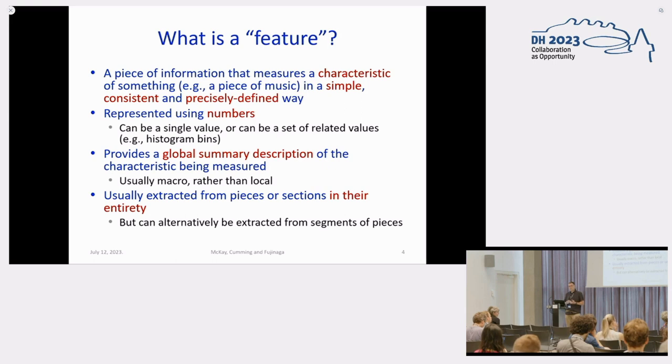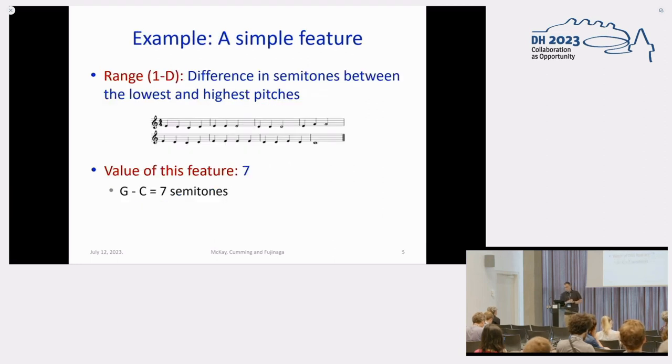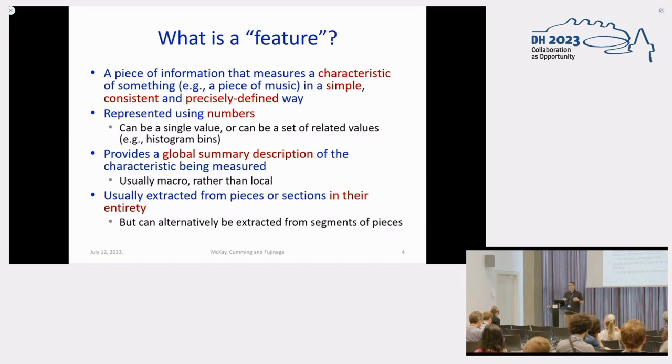We're going to be extracting features from pieces in their whole, entire pieces or from major sections. It's also possible to extract n-grams or features from smaller windows of music. To give you a simple example of a feature, you could take this little melody and define a feature called range, defined as the difference in semitones between the lowest and highest pitches. In this case, the highest pitch is G, the lowest is C. The difference is seven, so therefore there's seven semitones. So the value of the feature is just seven. It fulfills all the requirements: you have a number that not only can be consistently extracted, but you can use it as a basis for comparison.